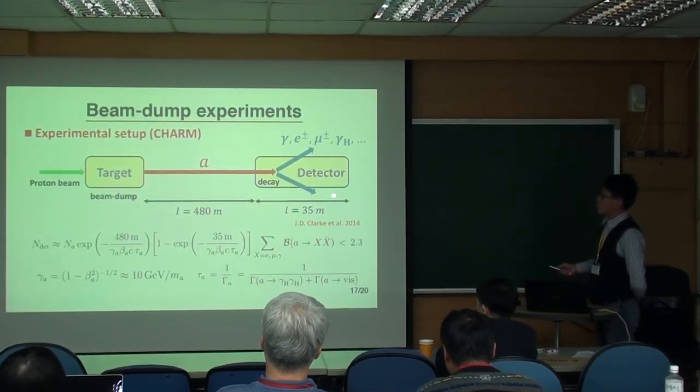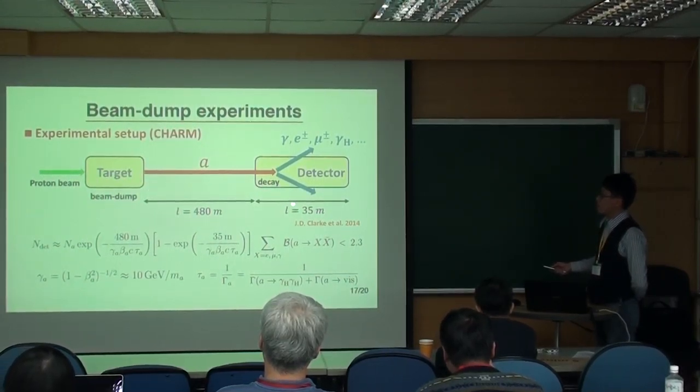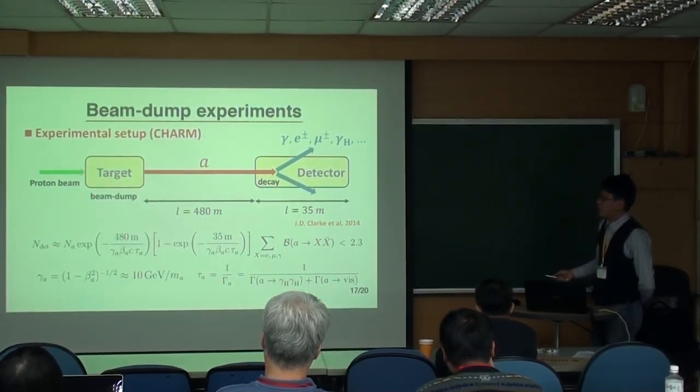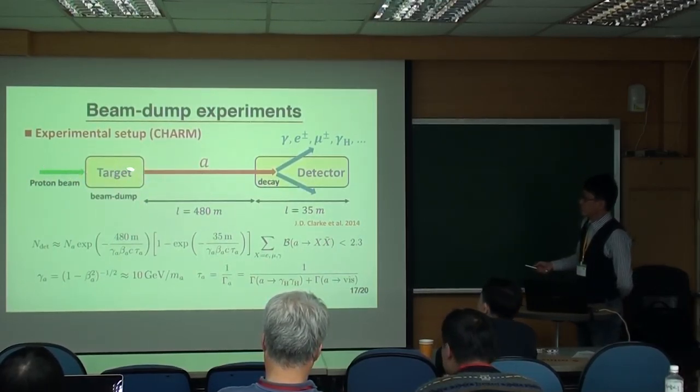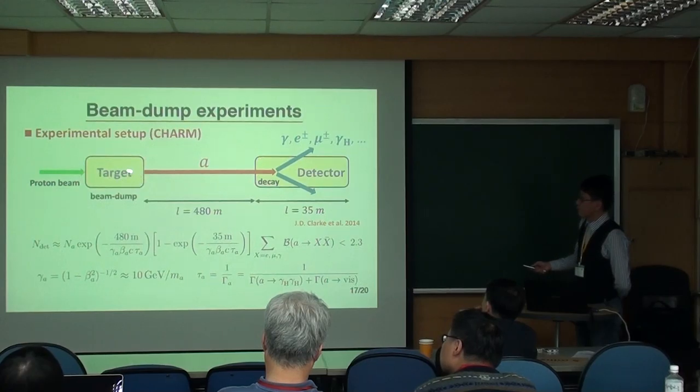So this is a simple picture for the beam-dump experiment. This is the beam-dump, basically just prepare the proton beam and give it to the target. And then at the target, there's a beam dump, so you produce some hadrons or pions.